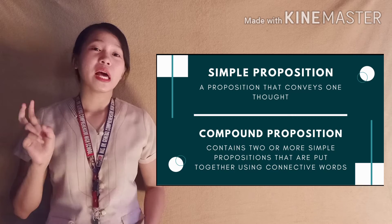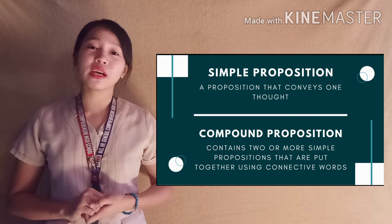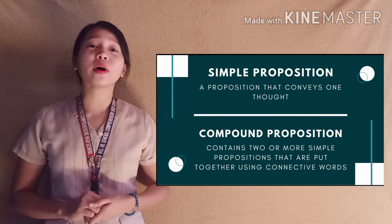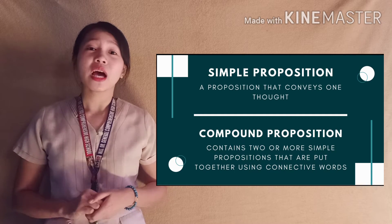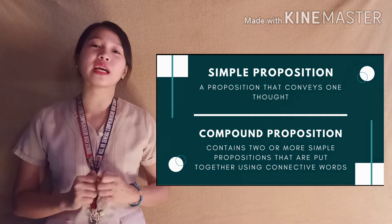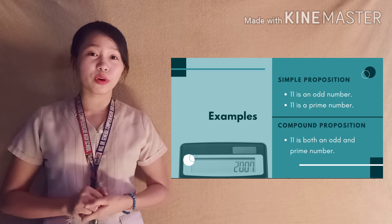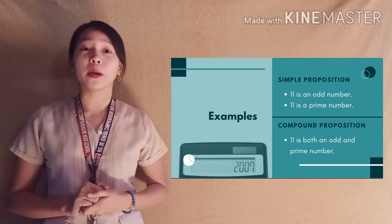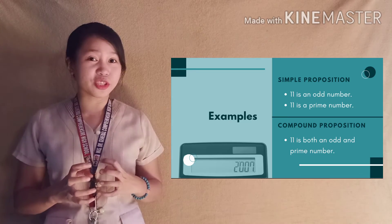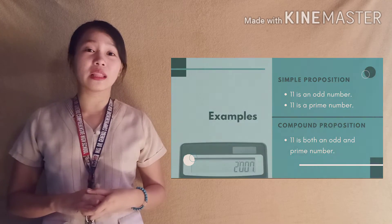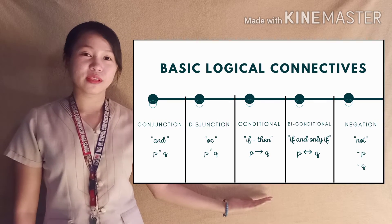Propositions can be categorized into two: simple and compound. A simple proposition conveys one thought, while a compound proposition is composed of two or more simple propositions put together using connective words. Examples of simple propositions are: 11 is an odd number, and 11 is a prime number. From these, we can derive a compound proposition: 11 is both an odd and a prime number.